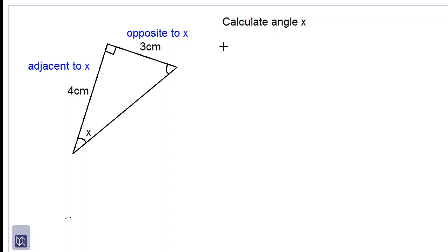So the tan of an angle, tangent written tan for short, is equal to opposite divided by adjacent. So the opposite side is 3 cm long and the adjacent side is 4 cm long. So we have tan of X being equal to 3 quarters or 0.75. When we divide 3 by 4, we get 0.75.